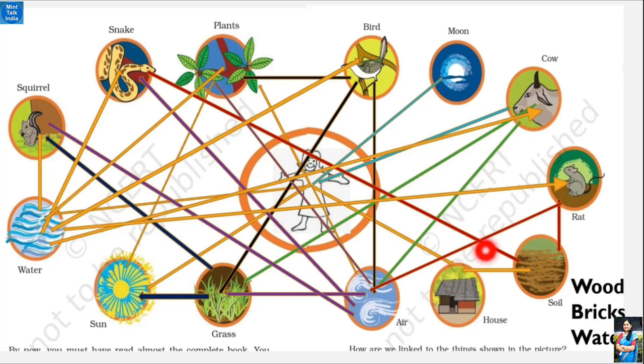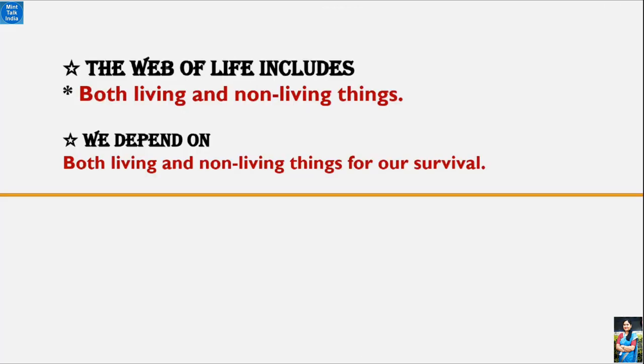If you have seen with attention, we have seen some non-living things like house, soil, moon, water, and sun. And we have seen some living things like squirrel, snake, bird, cow, rat, and us. So we can say that the web of life includes both living and non-living things. And we depend on both living and non-living things for our survival.